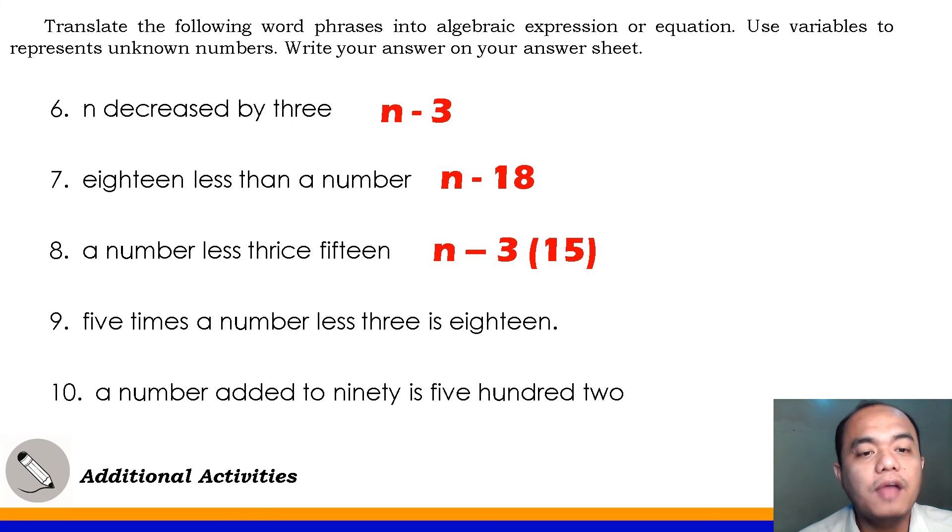Next, number 9, five times a number less 3 is 18. Very good, it's 5N minus 3 equals 18. And number 10, a number added to 90 is 502. Very good, it's N plus 90 equals 502. Now, count your score. What's your score? I know you've got a very good score for this additional activities. Congrats!